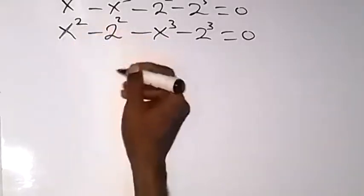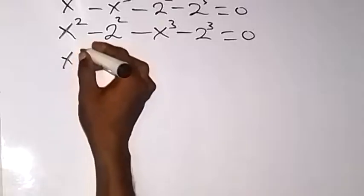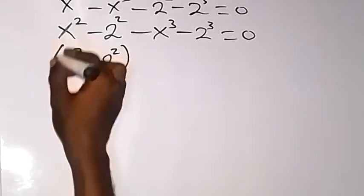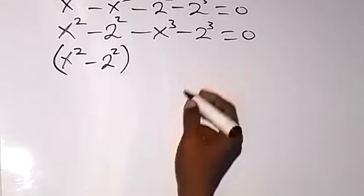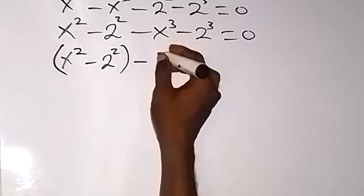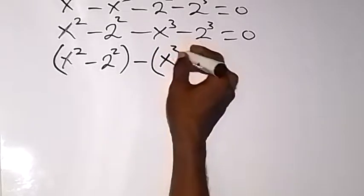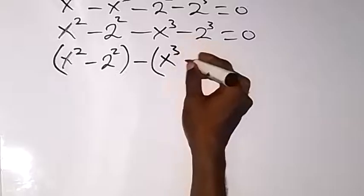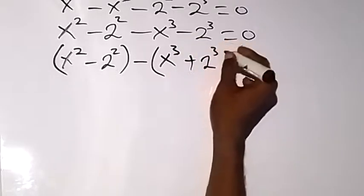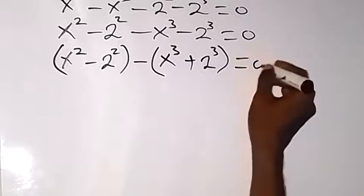Let's bring it in brackets and we have x squared minus 2 squared in bracket. Then something is common here, which is minus. So let's bring the minus out, and what we have here will be x squared, then plus 2 squared now. So we brought this minus out, then it equals to 0 now.